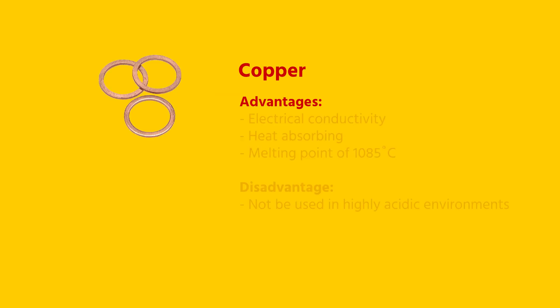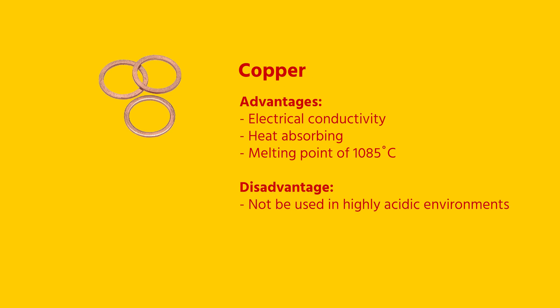Copper is often used for its electrical conductivity and heat-absorbing properties. Because of this, it is widely used in motorsports. Copper has a melting point of 1085 degrees Celsius, making it extremely heat-resistant. However, it should not be used in highly acidic environments.